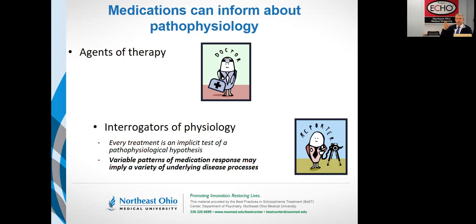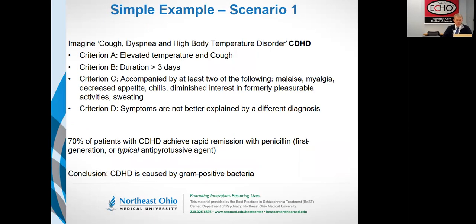To reframe what I said: drugs have two identities. One is that they are little agents of change that we use to treat illness — that's how we're typically taught in medicine. But they're also interrogators of physiology. Every single treatment that you do, whether it's using a drug or even a psychotherapy, ultimately is testing a pathophysiological hypothesis. And when the response is not as you predict, then you should rethink your hypothesis.